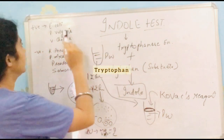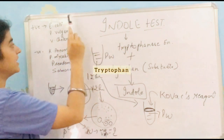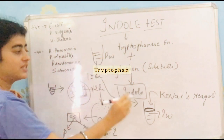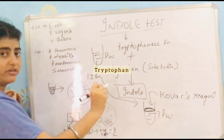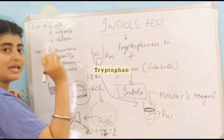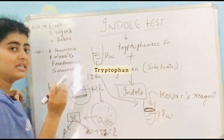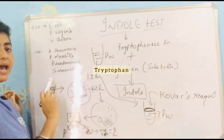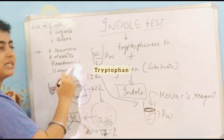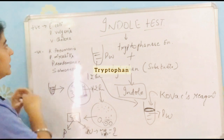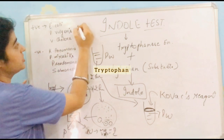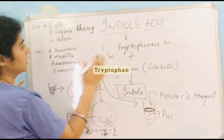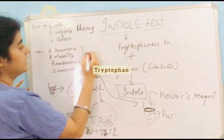If there is a cherry-colored ring, the indole test is positive, meaning the bacteria produces tryptophanase. If there is a yellow-colored ring, the indole test is negative. Bacteria that give a yellow-colored ring include Klebsiella pneumoniae, Proteus mirabilis, Pseudomonas, and Salmonella.